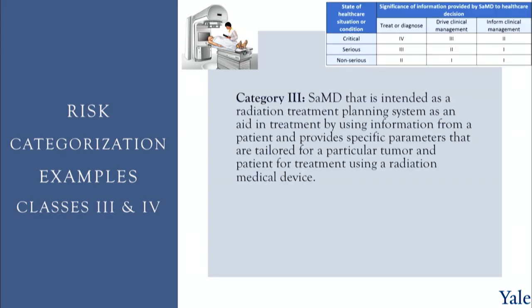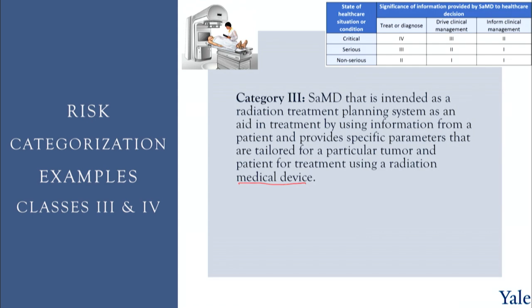Class 3 brings us to the radiation treatment planning example. This is software intended as a radiation treatment planning system: it takes information from a patient and provides specific parameters tailored to a particular tumor for treatment using a radiation medical device. The software takes images of a patient and creates parameters for a radiation treatment plan. We're driving clinical management in a critical case — a patient with cancer whose absent treatment may have a very serious outcome.